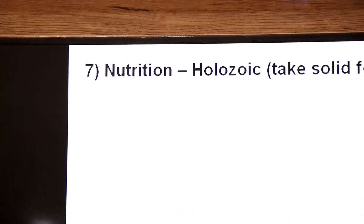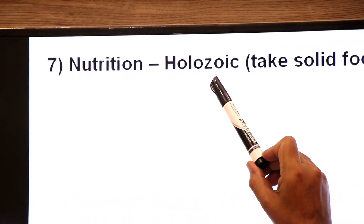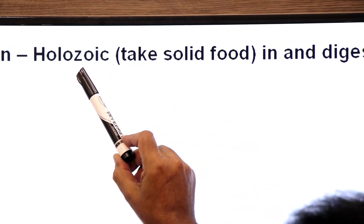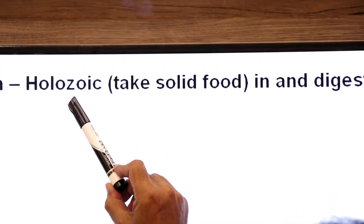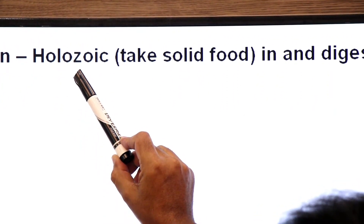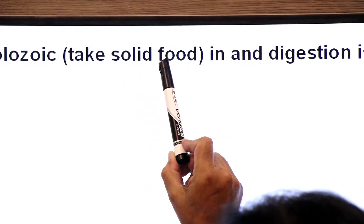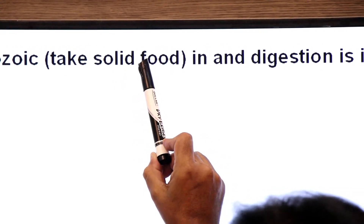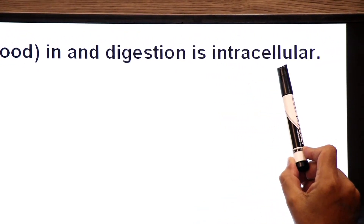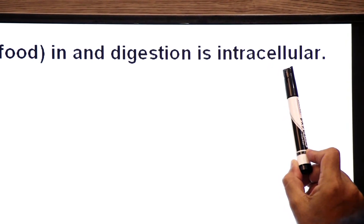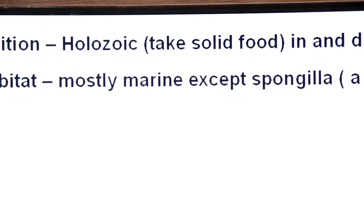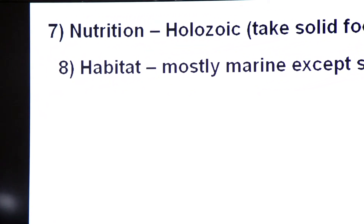Regarding nutrition of sponges, they are holozoic in their nutrition. 'Holo' means complete, 'zoa' means animal — complete animal-like nutrition. They take in solid food by a process called ingestion, and in the body of sponges the digestion is intracellular — digestion that takes place inside the cell.